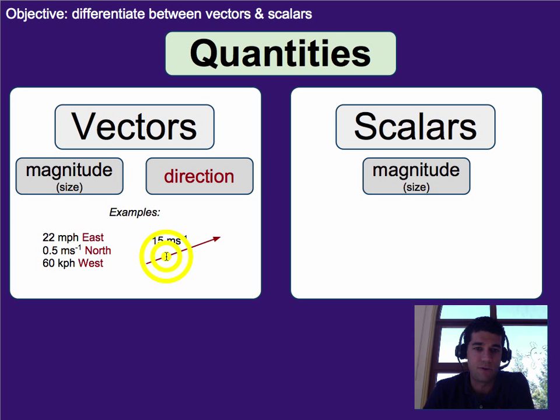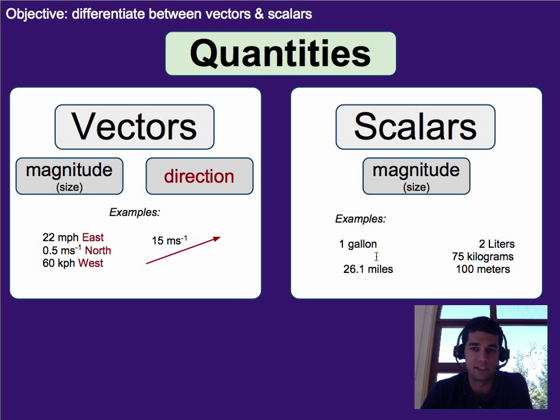Or they can be an arrow like this and tell you the direction, and either the size of the arrow, like physically the length of it, or the number next to it can give you the magnitude. Scalars, on the other hand, are just magnitude, which means they just have the size and the units.